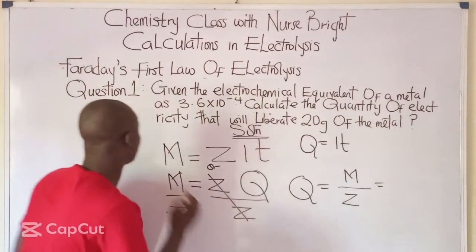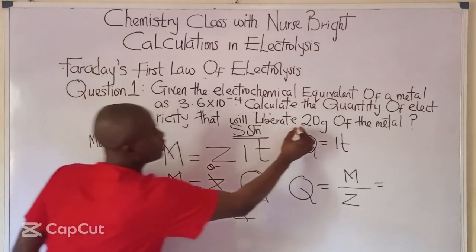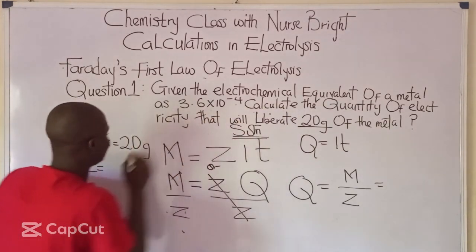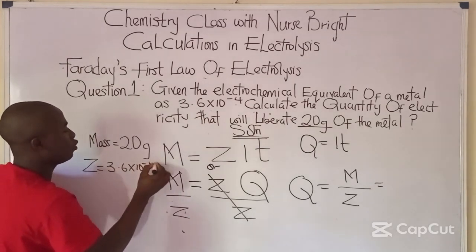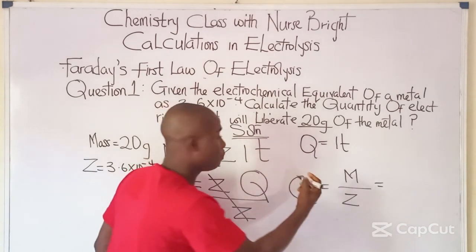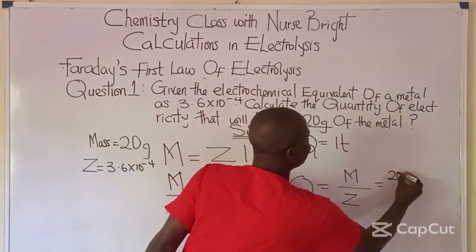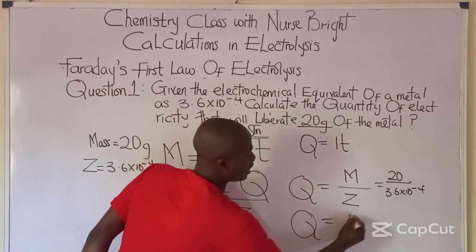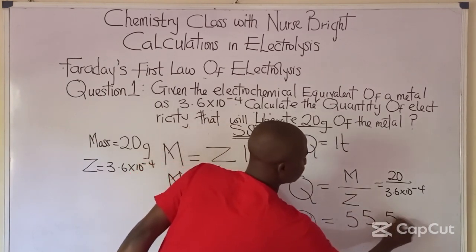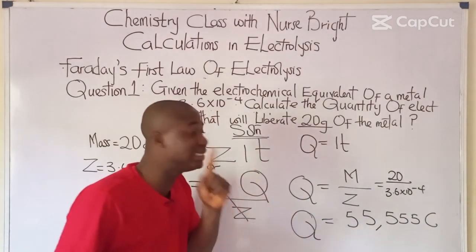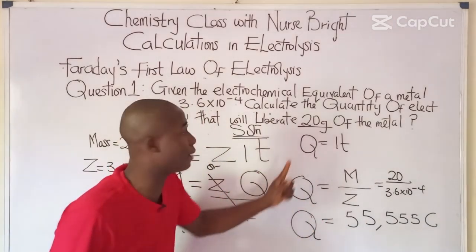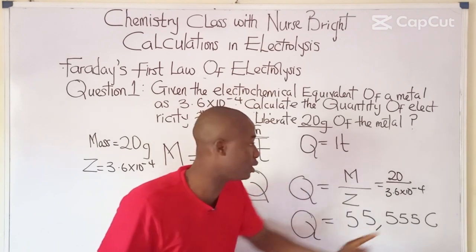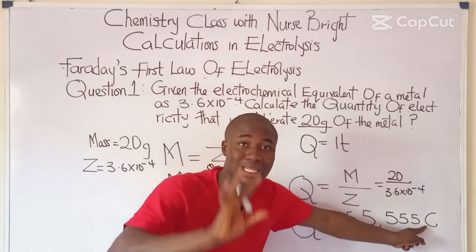The mass M given is 20 grams, and the electrochemical equivalent Z is 3.6 × 10⁻⁴. Substituting: Q = 20 / (3.6 × 10⁻⁴), which gives 55 coulombs. The quantity of electricity has an SI unit expressed in coulombs (C). So 55 C is the quantity of electricity that will liberate 20 grams of the metal.